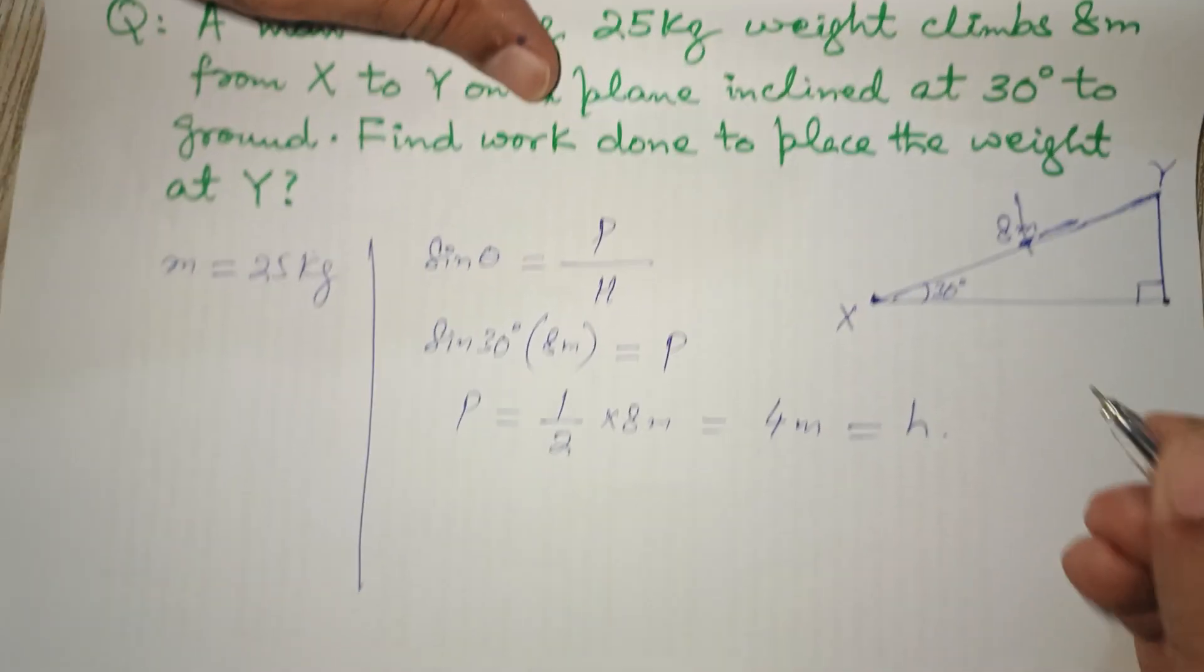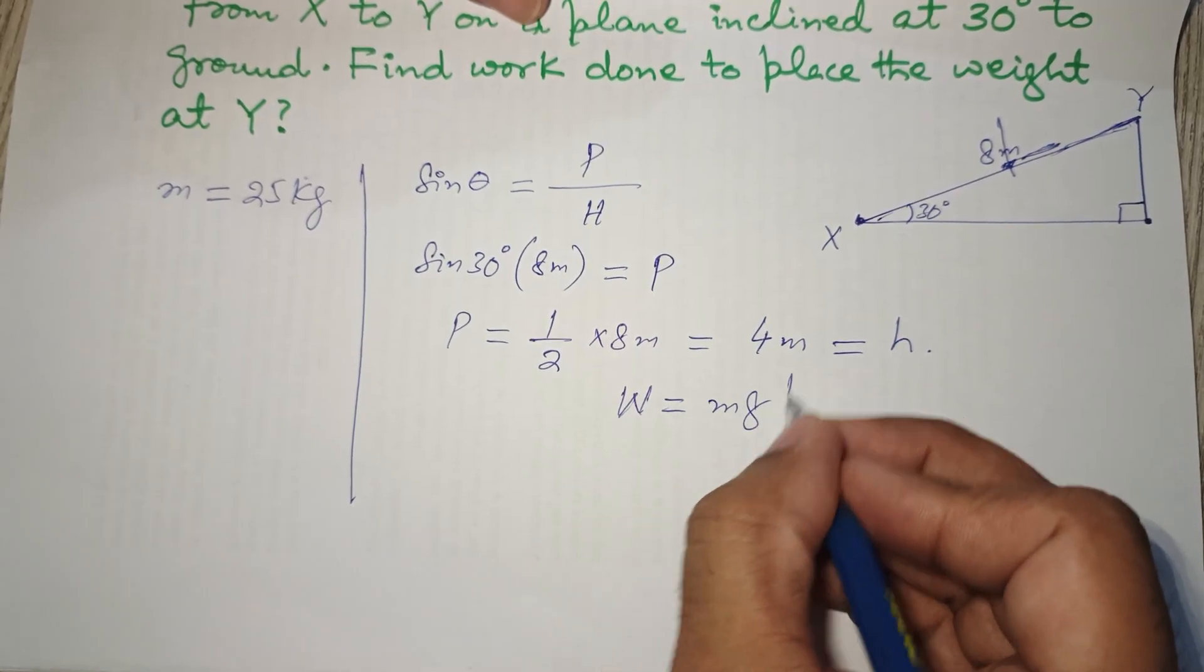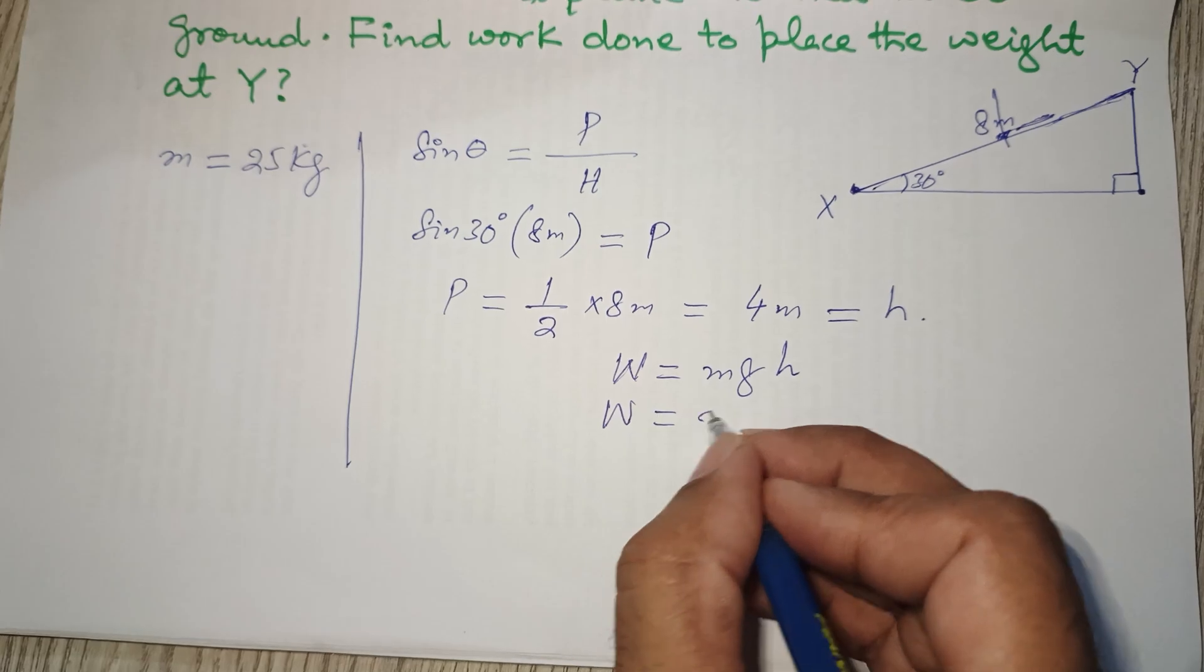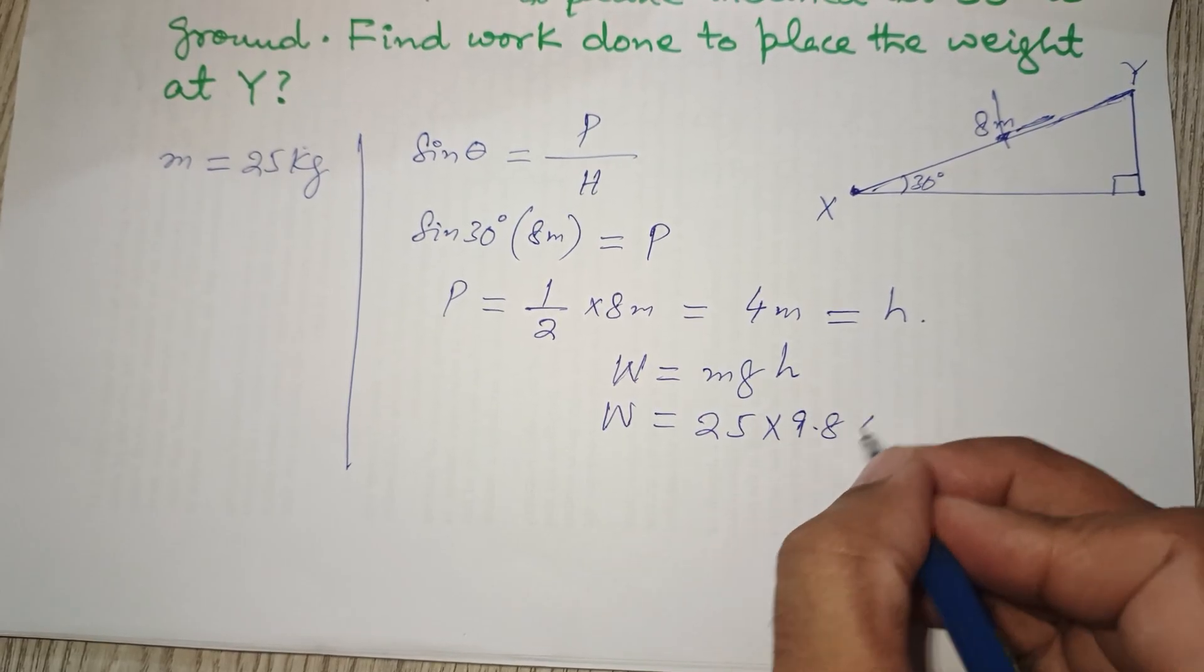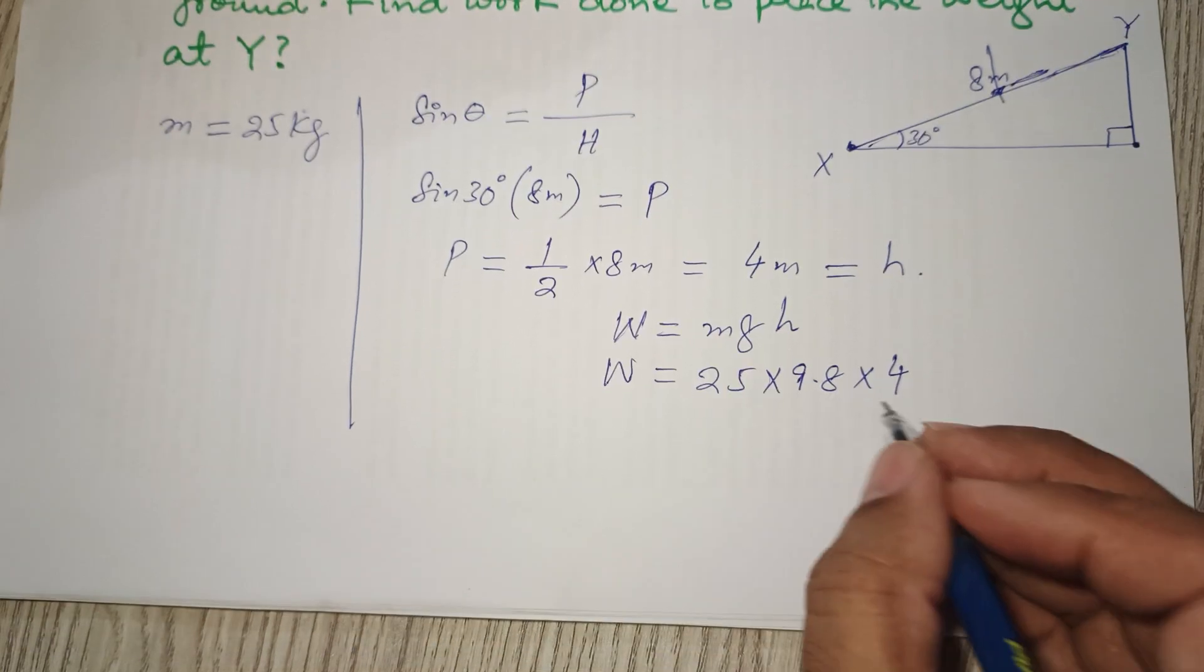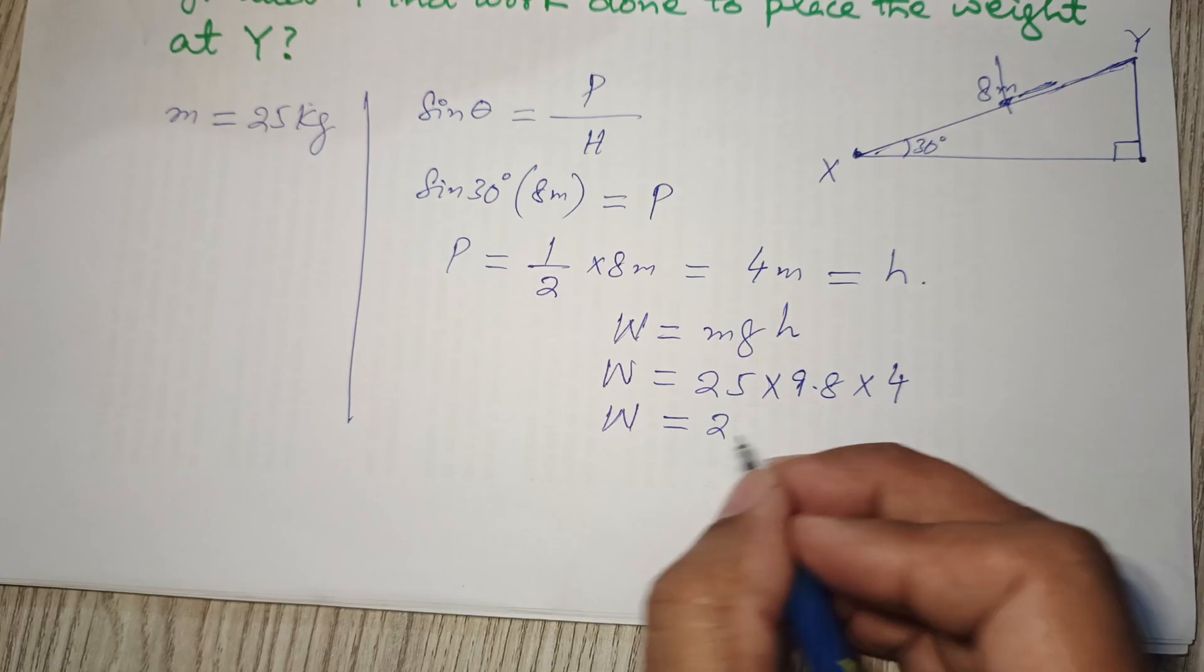So we have to find out W. W equals mgh. M is 25, g is 9.8, and h is 4. So this will be 25 into 4 is 100, and 100 into 9.8 will be 980 joules. This is your answer.